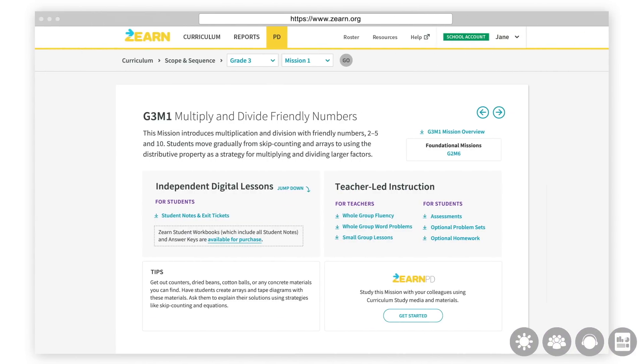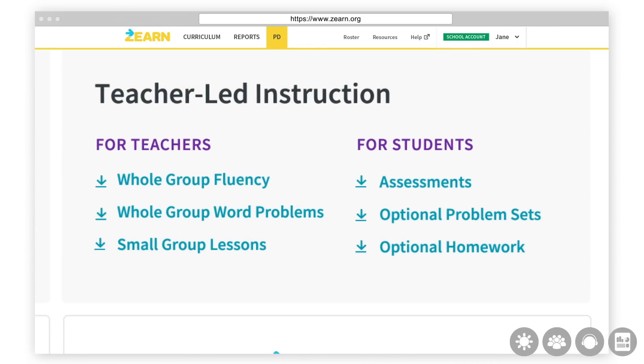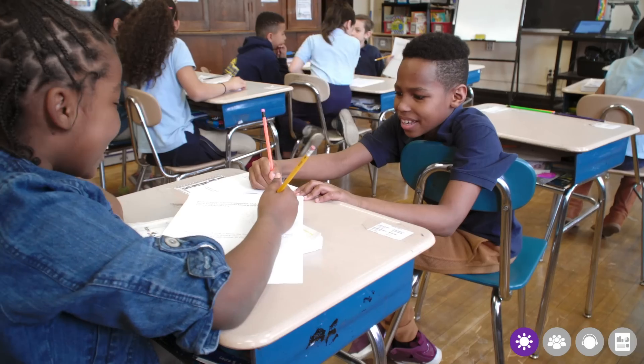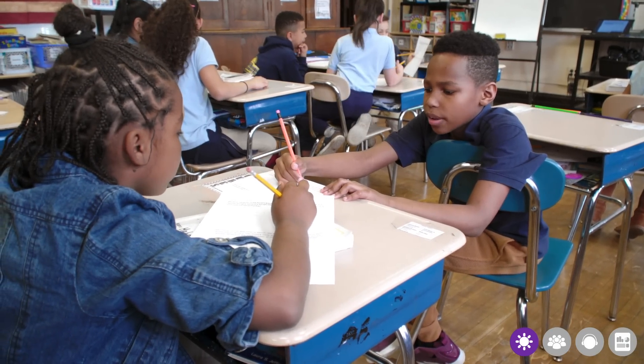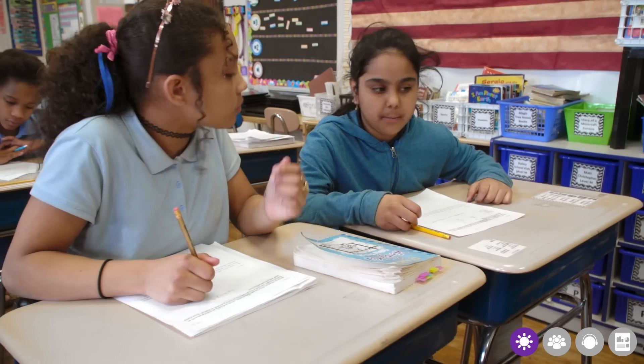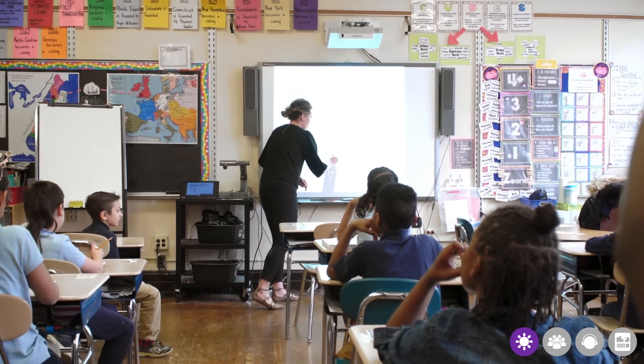Here is the teacher page for Grade 3 Mission 1, Multiply and Divide Friendly Numbers. Every mission or unit of our curriculum has a page like this, with all of the resources for instruction in one place. Let's first look at teacher-led instruction. Each day with Zearn Math kicks off with whole group fluency and word problem activities. This whole group warm-up time engages the community of learners, kicks off student-led math dialogues, and allows students to work with and learn from all of their classmates. As students engage in fluency and application practice, they activate prior learnings in preparation for upcoming work. Zearn Math provides all the daily materials needed for this whole group time.